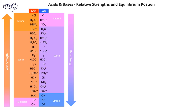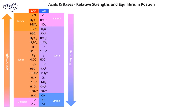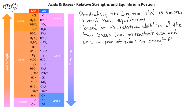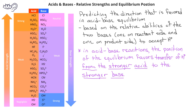If we have a table such as this given to us, we can use this table to predict the direction an acid-base equilibrium reaction will be favored. The position of the equilibrium in a hydrogen ion transfer reaction is governed by the relative abilities of the two bases to accept the hydrogen ion. In acid-base reactions, the position of the equilibrium favors the transfer of a hydrogen ion from the stronger acid to the stronger base, and they will form the weaker acid and the weaker base, meaning more weak acid and weak base will be present at equilibrium.